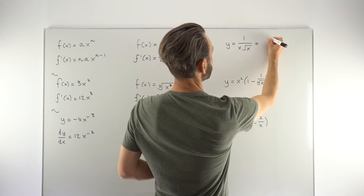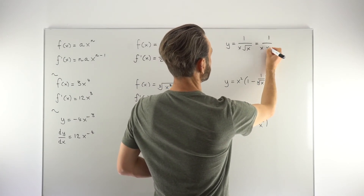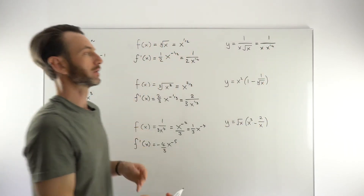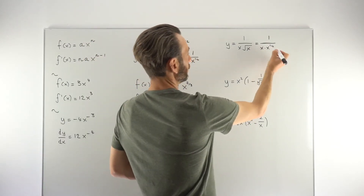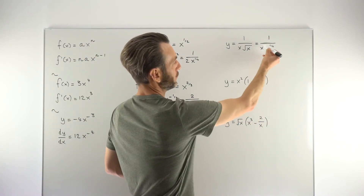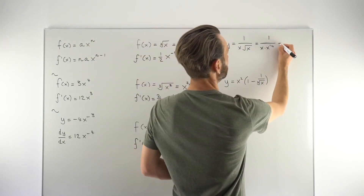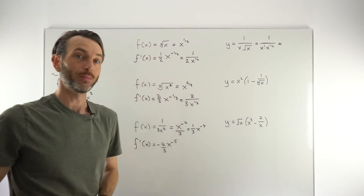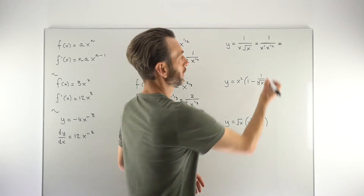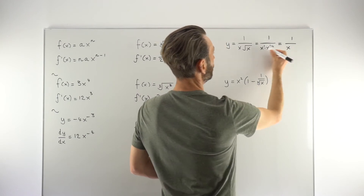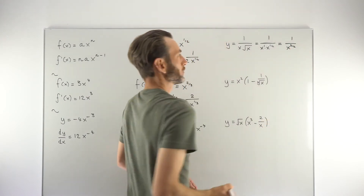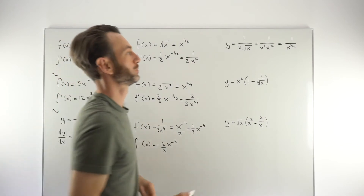First, change the square root to a one-half power: so it becomes 1 over X times X to the one-half. That gets rid of the square root, but this is now a product, which is non-differentiable for us using only the power rule. So we continue to manipulate. The X term is really X to the power of 1, so multiplying X's means adding powers: 1 plus one-half equals three-halves.